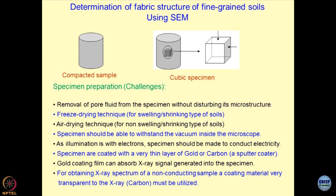Using this concept, people have been studying the fabric structure of fine-grained soils. What we have done is compact the soil sample — a triaxial sample, for instance. After the sample has been tested for its shear strength properties, you take out a small element from within the sample, about one centimeter cube. This one centimeter cube specimen is then looked at from two perpendicular sides to see material heterogeneity perpendicular and parallel to the compaction plane.